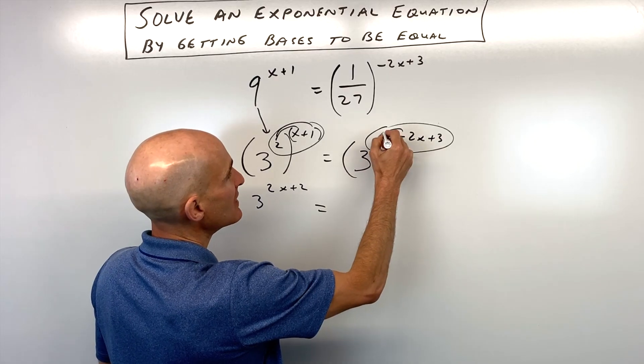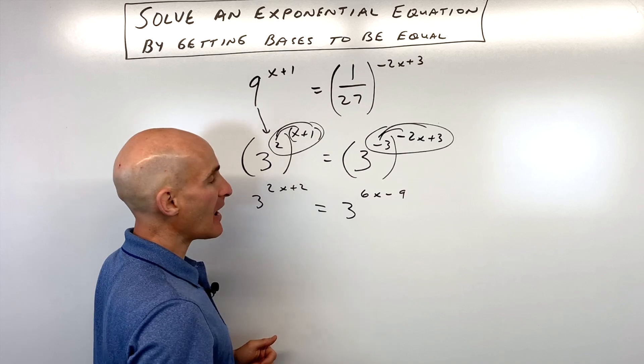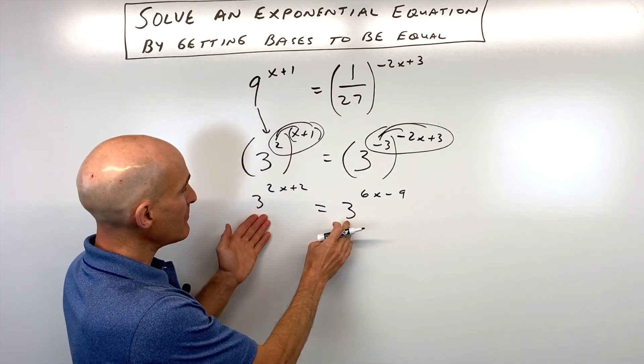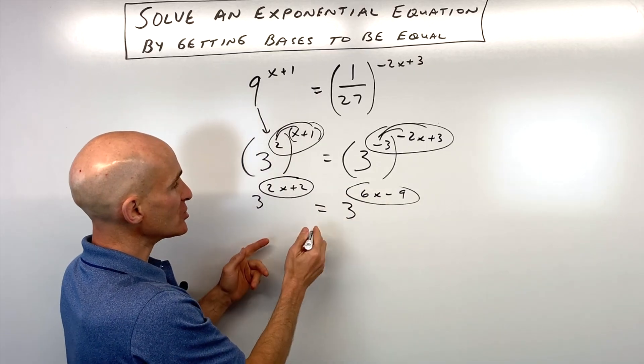Here we distribute the negative 3, this is 3 to the 6x-9 power. Now you can see we have the same base, so we can set those exponents equal to each other.